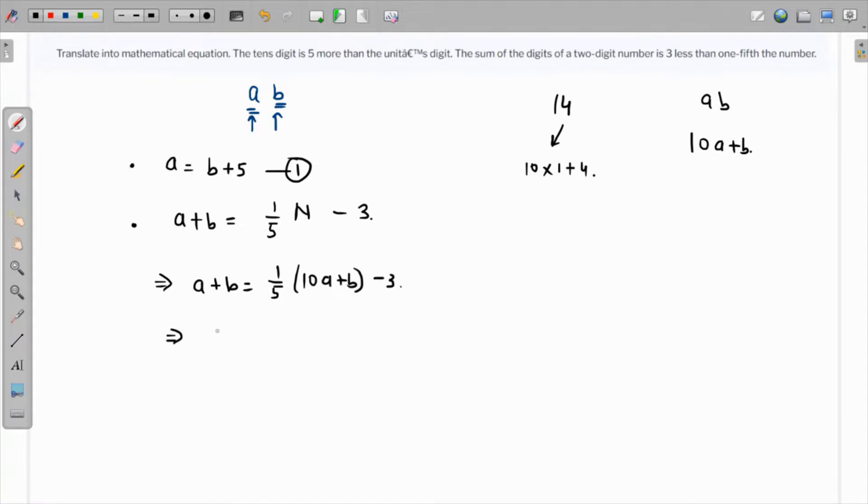If we multiply 5 on both sides, we have 5a + 5b = 10a + b minus 5 times 3 is 15.